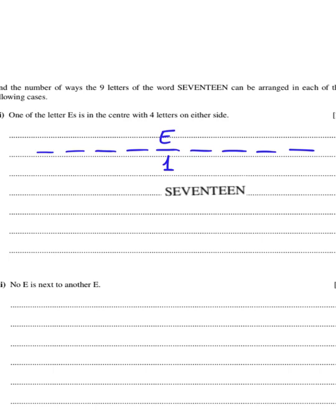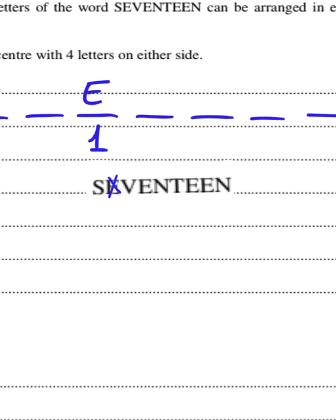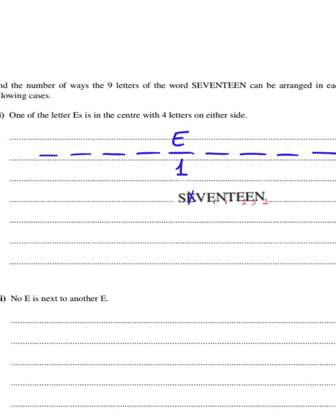I copy the word SEVENTEEN here. I use one E in the middle, so I have eight letters to arrange. However, I have some duplicates: E1, E2, E3, and N1, N2. Therefore, I'm going to arrange these eight letters in 8! ways, but I need to divide by 2! times 3! to account for the duplicates. When putting this in my calculator, I get 3360 ways.